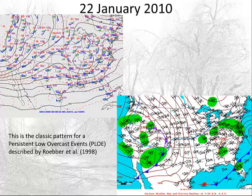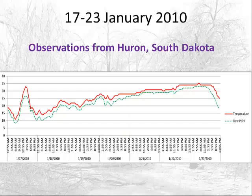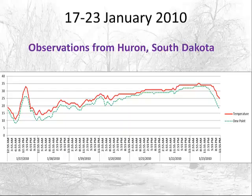Looking at Huron, South Dakota as an example: red is temperature, green is dew point. After January 17th, the temperature-dew point spread stayed right around one to two degrees Fahrenheit — typical for a below-freezing fog event with snow on the ground. Some moisture falls out as frost, freezing the surfaces, which keeps the dew point closer to the ice wet bulb temperature. The relative humidity with respect to ice is near 100%, not with respect to water.